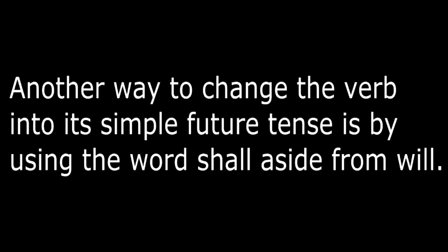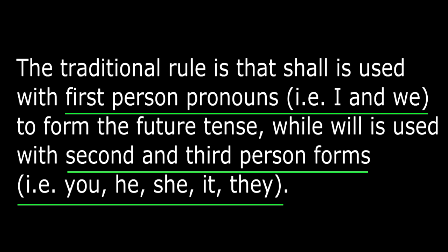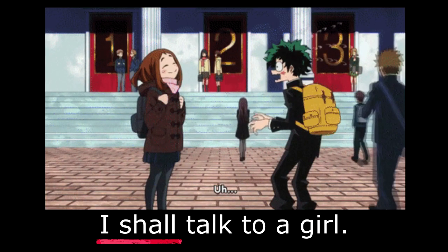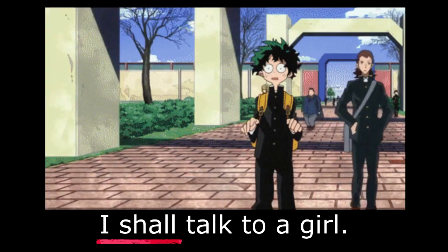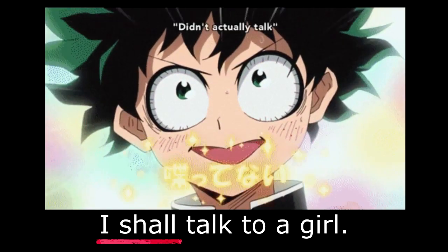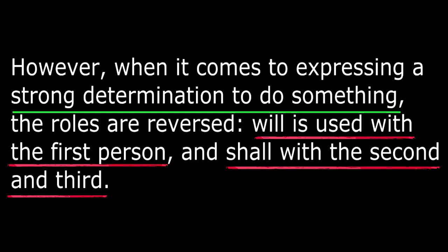Another way to change a verb into its simple future tense is by using the word shall aside from will. But when do we use shall? The traditional rule is that shall is used with first person pronouns like I and we to form the future tense, while will is used with second and third person pronouns like you, he, she, it, and they. For example: I shall talk to a girl; they will follow him. However, when expressing strong determination, the roles are reversed — will is used with the first person and shall with the second and third.